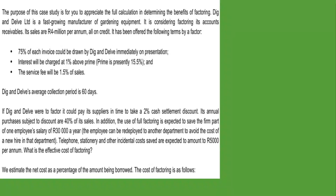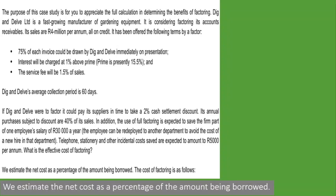We are going to estimate the net cost as a percentage of the amount being borrowed and compare it to the bank's loan rate of 15.5%. The first step is to calculate the finance charge. We need to account for the 60-day average collection period, so we take 60 divided by 365 days, times the 4 million rand in credit sales, giving us 657,354 rand — that is how much needs to be collected within the next 60 days.